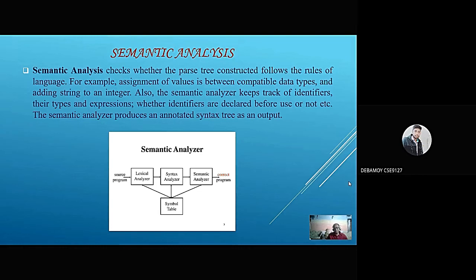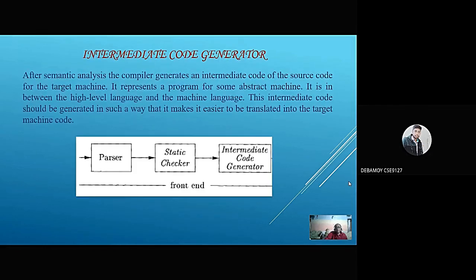The next phase of the analysis phase is the intermediate code generator. After semantic analysis, the compiler generates an intermediate code of the source code for the target machine. It represents a program for some abstract machine, in between the high-level language and the machine language. The intermediate code should be generated in such a way that it makes it easier to be translated into the target machine code.